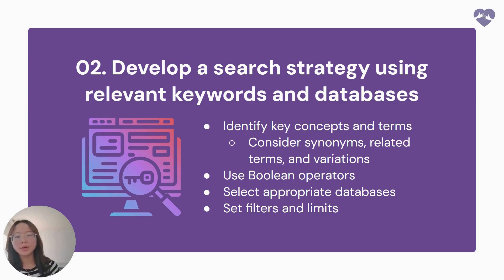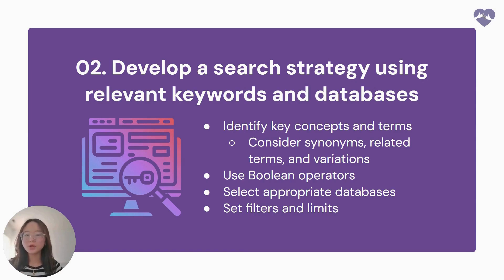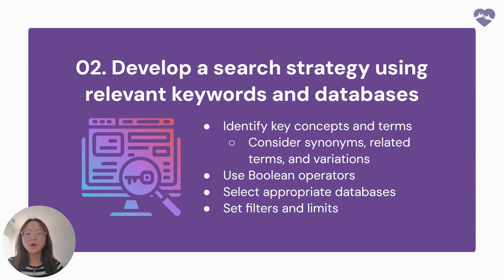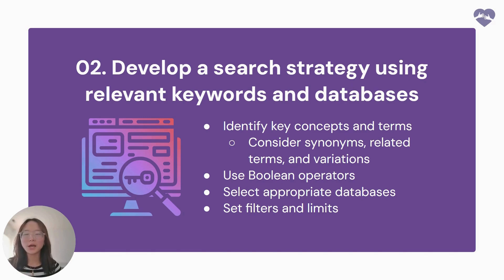Then you want to use Boolean operators to combine these keywords and refine your search. For example, you could search for 'AI AND education AND engagement' to get results that include all three terms, or 'AI OR technology AND education' if you want to broaden the scope. For these searches, you want to select appropriate databases. Google Scholar is a great general resource, but for specialized fields you'll want more specific databases — for biomedical research you can use PubMed, and for engineering topics you can use IEEE Explore.